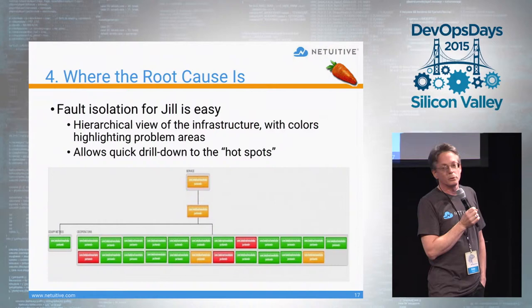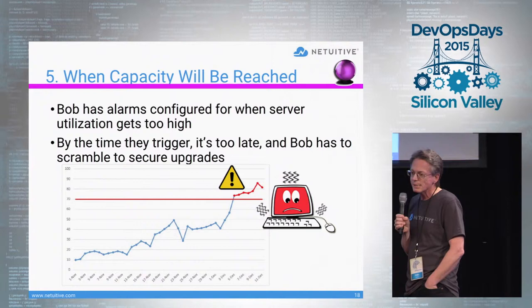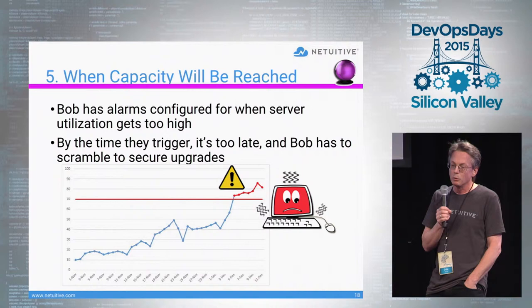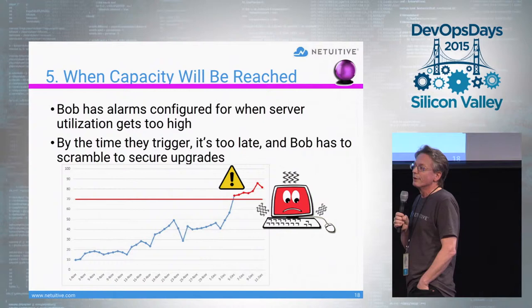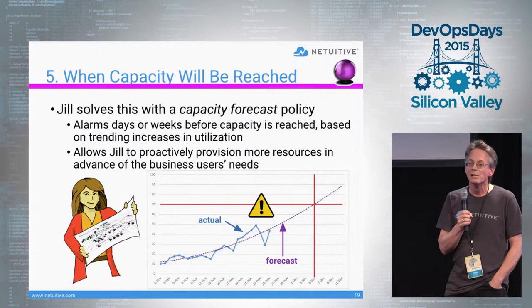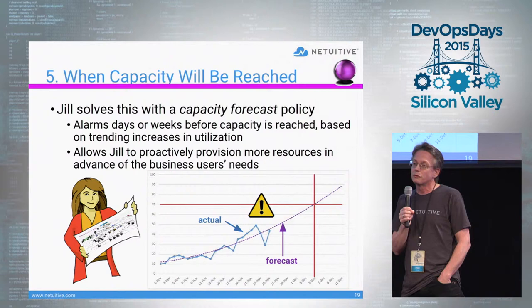Bob has alarms configured for when overall server utilization is too high. Unfortunately, by the time they trigger, it's too late and performance has already begun to suffer. And Bob knows from past experience that simply lowering the threshold is not going to be the solution. Jill solves this problem with a capacity forecast policy. By applying analytics to the current trend in server utilization, this policy can forecast into the future and allow Jill to proactively address capacity needs.